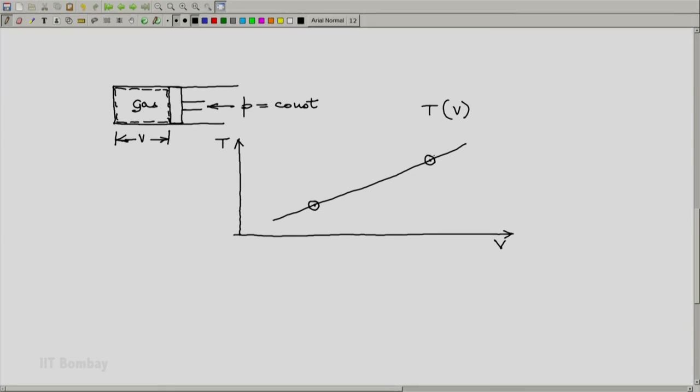So let us say this would be the state at the ice point, this could be the state at the steam point, and then this would be V at the steam point, this is the volume at the ice point. And we can define, for example, a Celsius scale based on this.